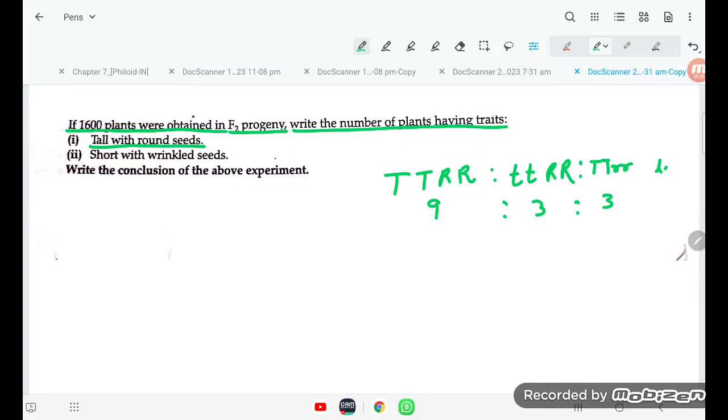Then the ratio is capital T capital T small r small r, that is 3, and small t small t small r, that is 1. So 9:3:3:1, this is the ratio.